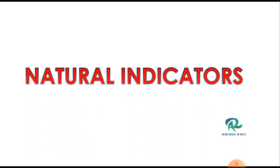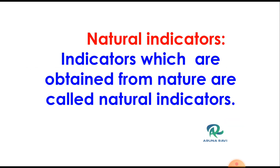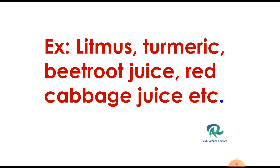What are natural indicators? The indicators which are obtained from nature are called natural indicators. For example, litmus, turmeric, and beetroot juice.